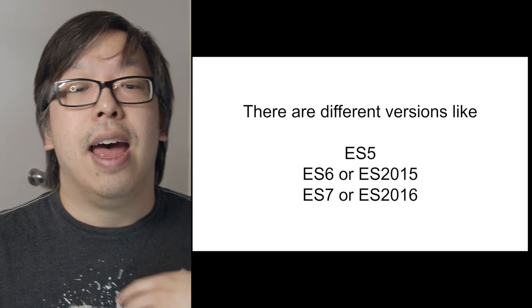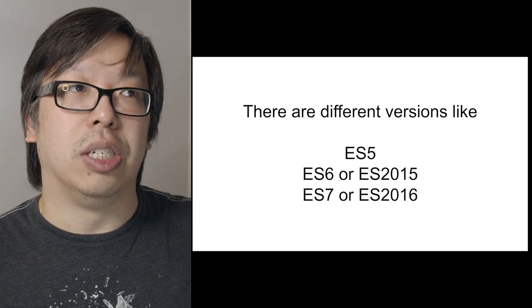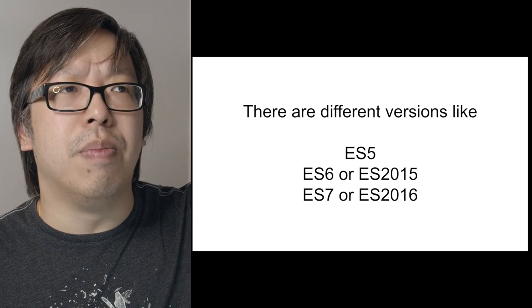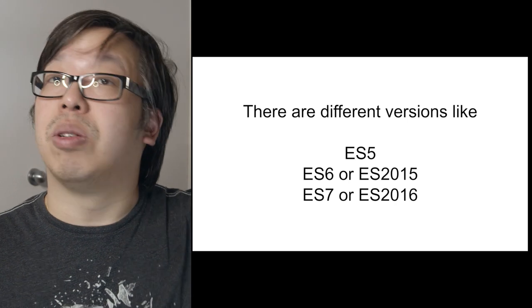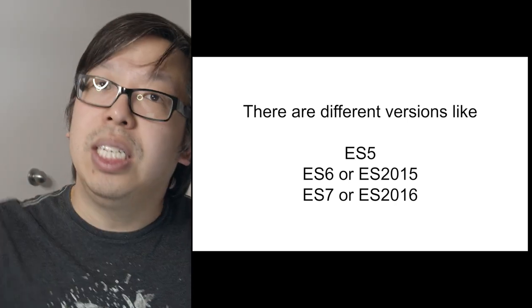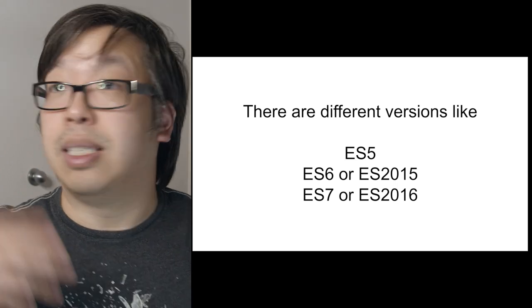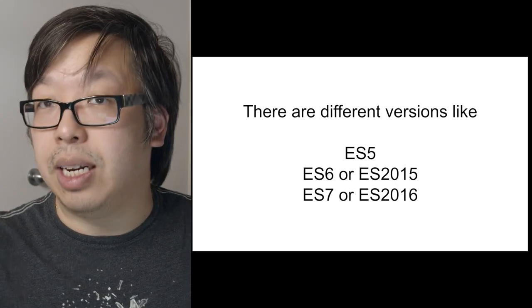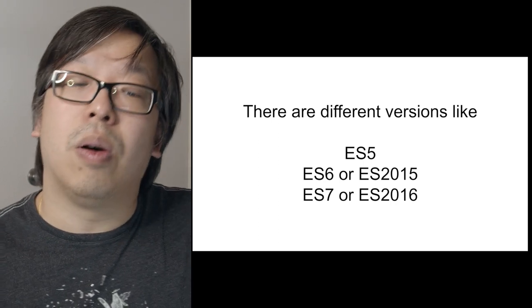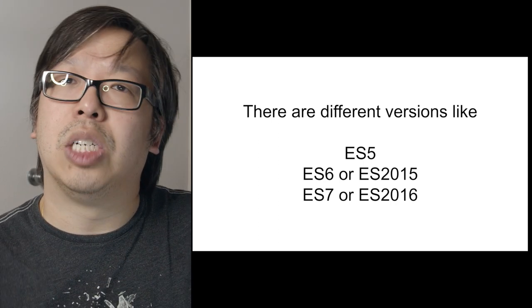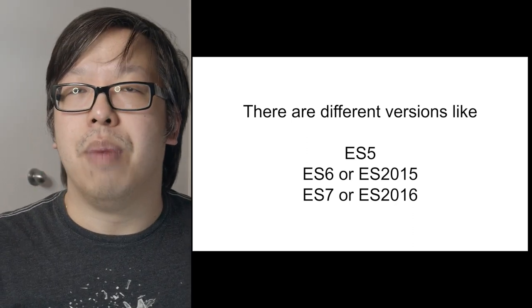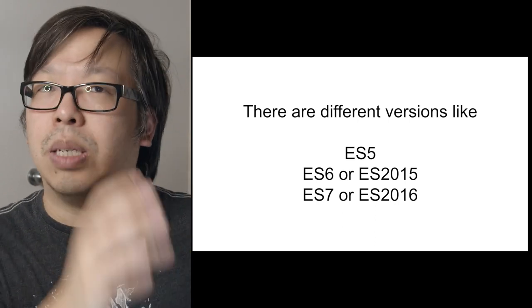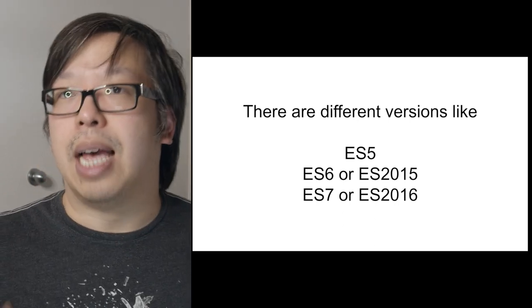There are a bunch of different versions of ECMAScript. One of the most popular ones is ES5, and more recently newer versions have come out: ES6 or ES2015, and ES7 or ES2016 — named for when the specification was finalized. These versions added more and more features to the specification. So ECMAScript is basically just a specification for a language.